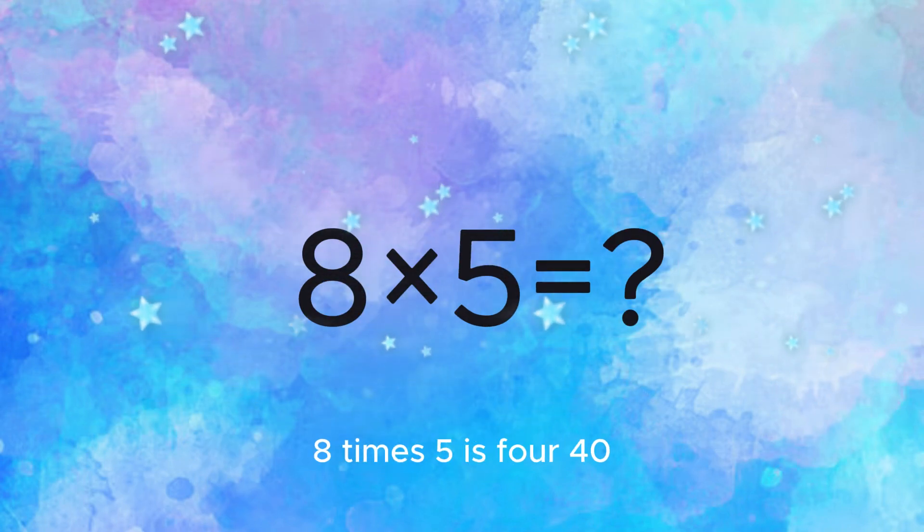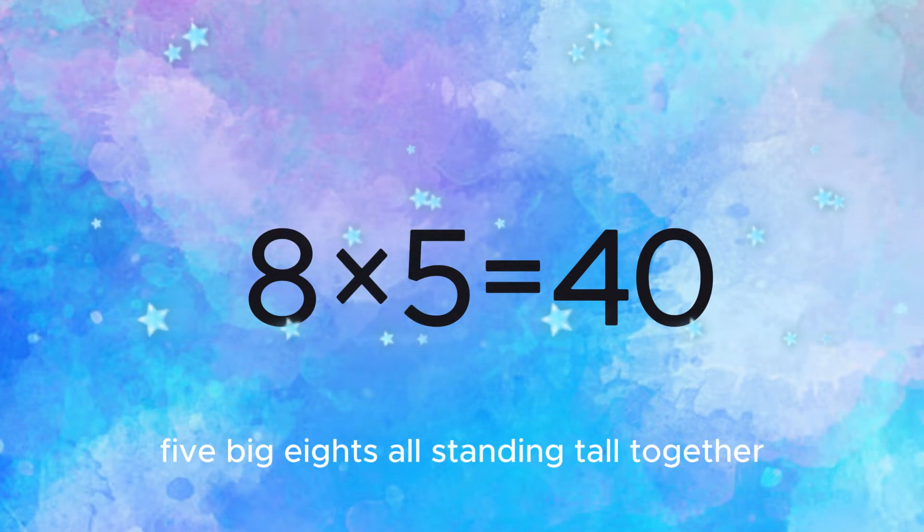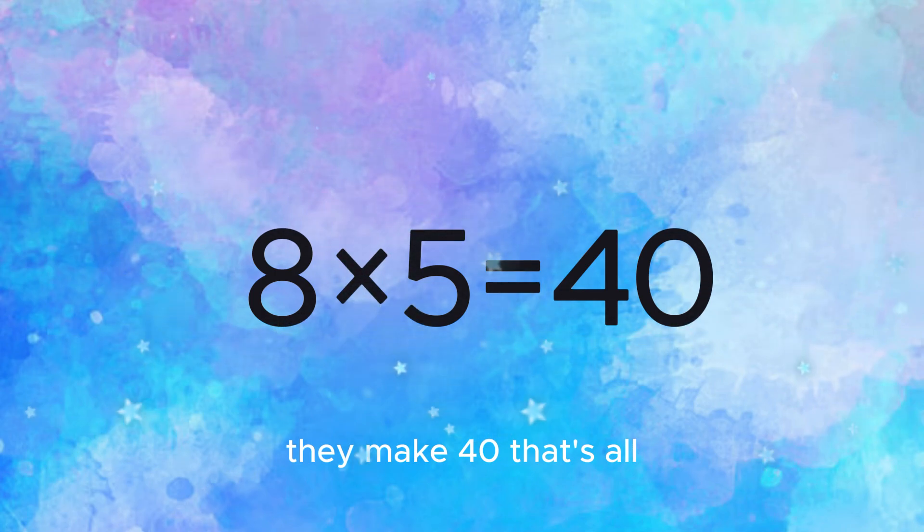8 times 5 is 40. Yes, you're passing every single test. 5 big 8s all standing tall. Together they make 40, that's all.